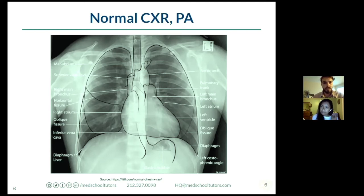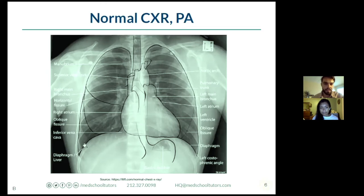You look at the bones, then the cardiac border - make sure it's less than half the chest diameter. Then look down at the diaphragms. I always like to look for air under the diaphragm, particularly on the left side under the liver, because it's going to be soft tissue against the diaphragm.